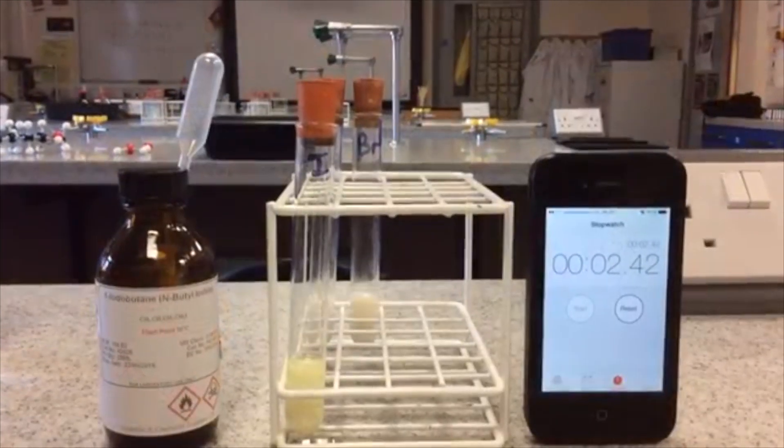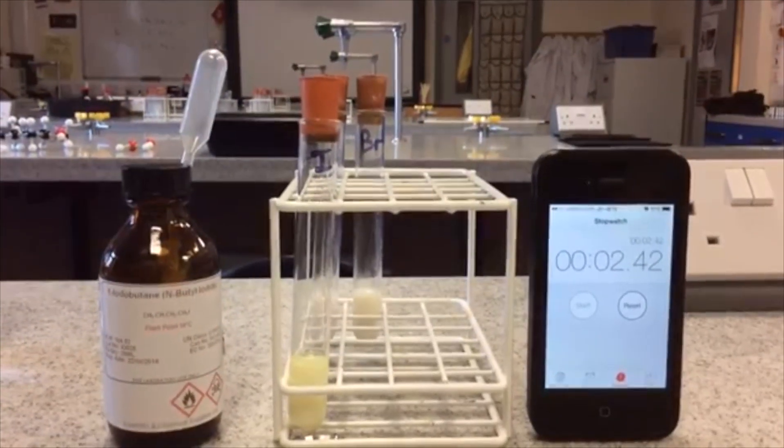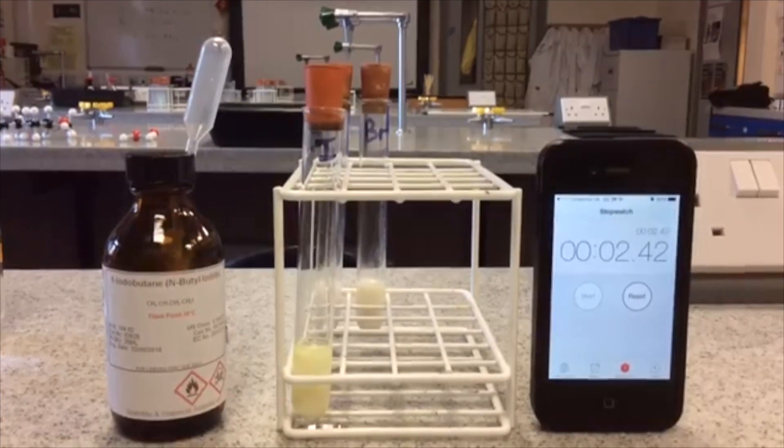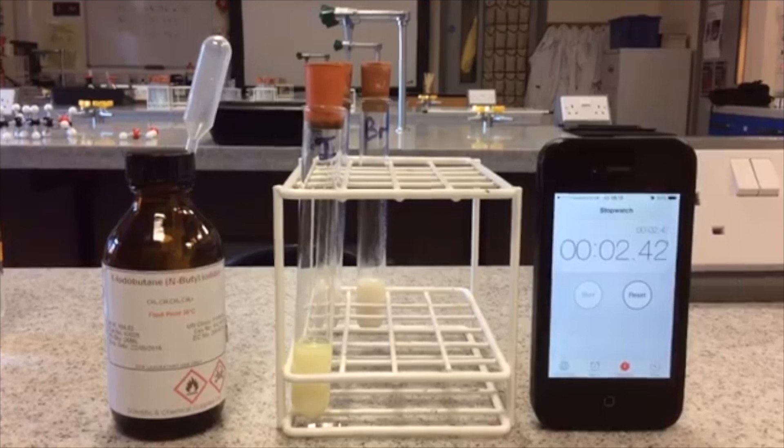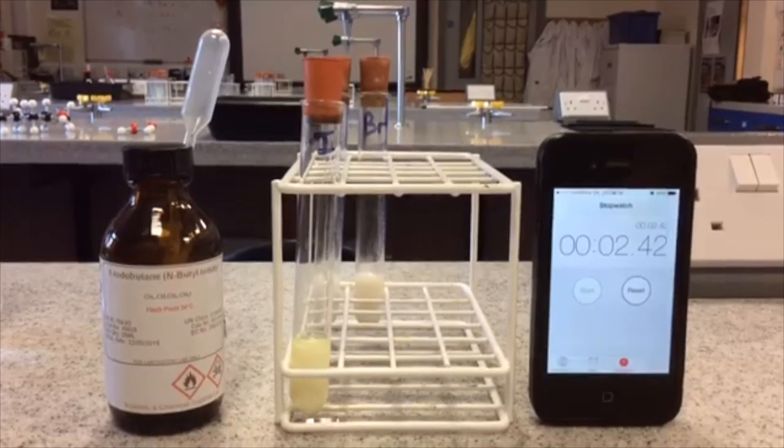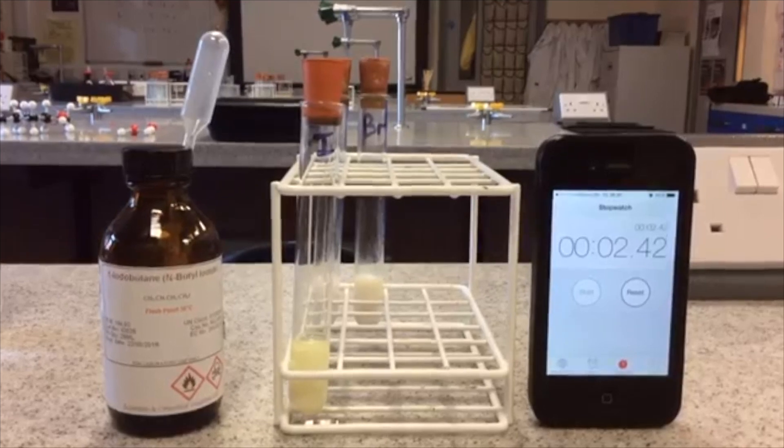Finally, we have the yellow precipitate of silver iodide, formed from the hydrolysis of iodobutane, and that's taken a really short amount of time: 2.42 seconds.